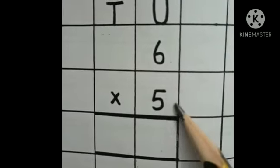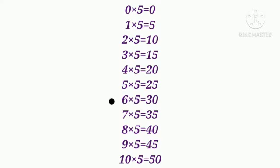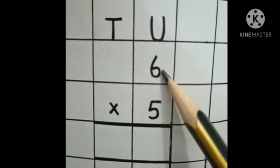Last one. This is number 6 and this is number 5. Ab humne 5 ka table 6 tak read karna hai. 6 times 5 is 30. Jab humne 5 ka table 6 tak read kiya, to hamare paas answer aaya 30.